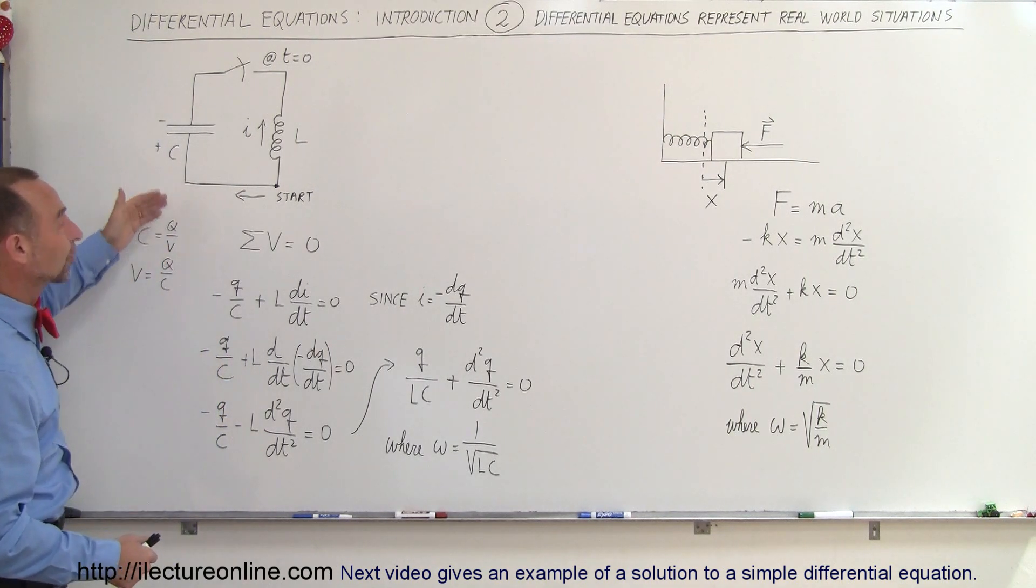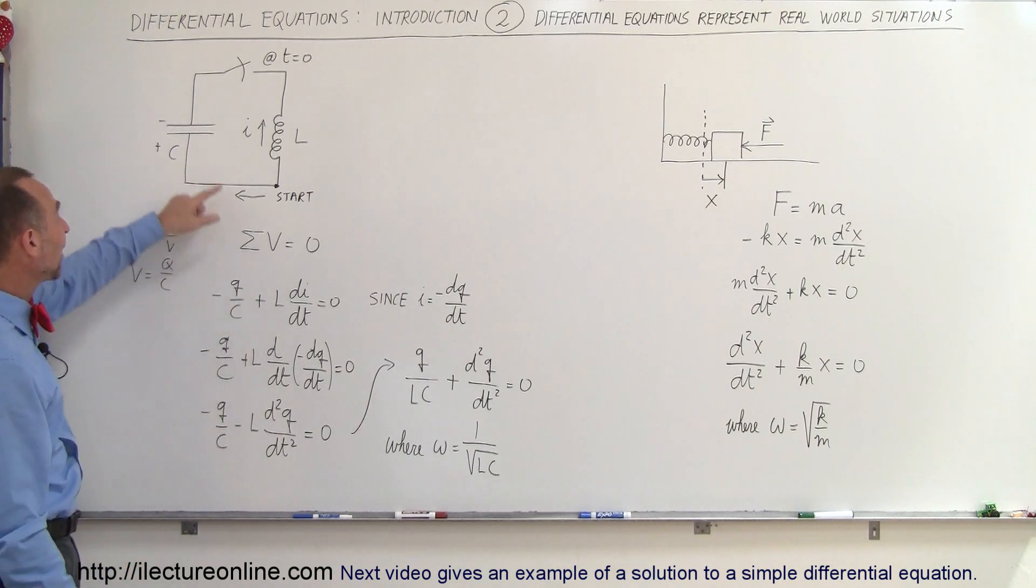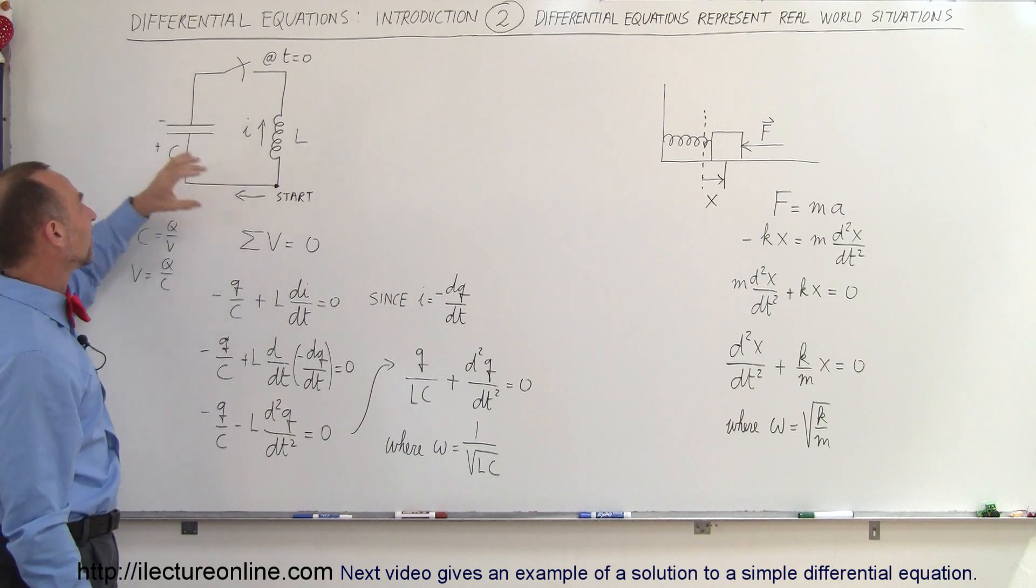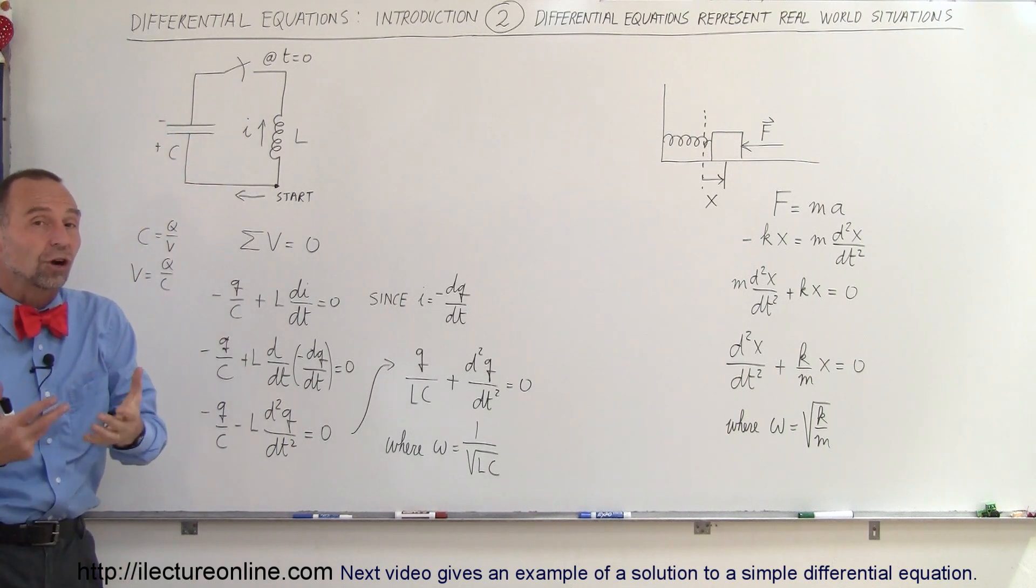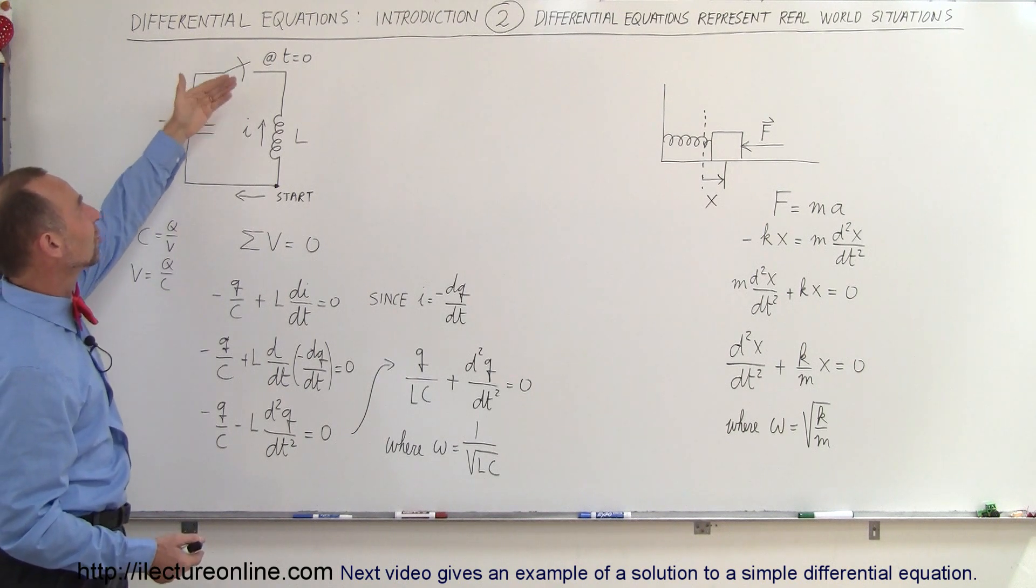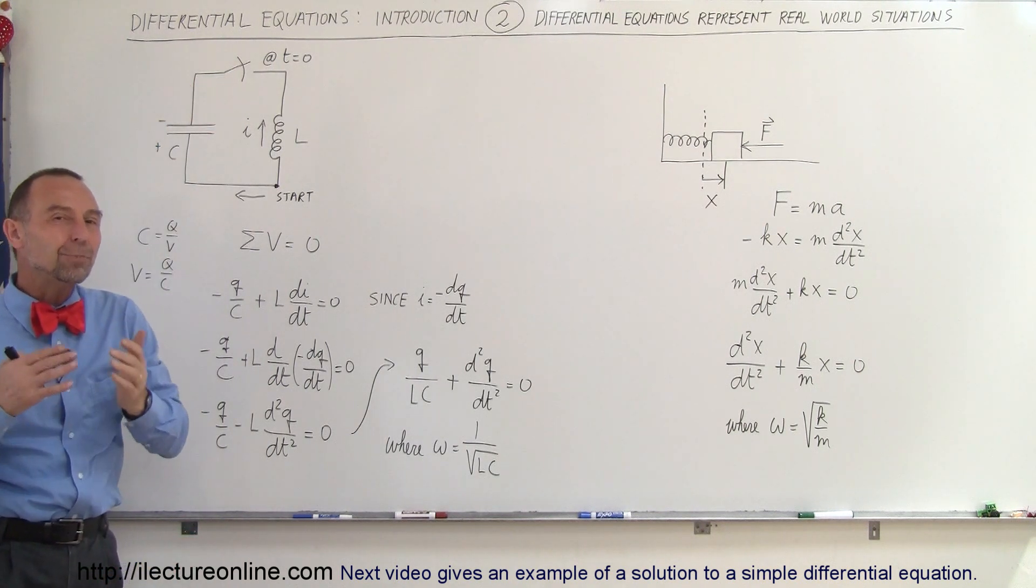Here's an example of an electric circuit, a very simple circuit. We have a capacitor, we have an inductor, and we have a switch. Let's say that initially the capacitor is charged up, it has a certain amount of charge, and now we close the switch at time equals zero. At any point after that,